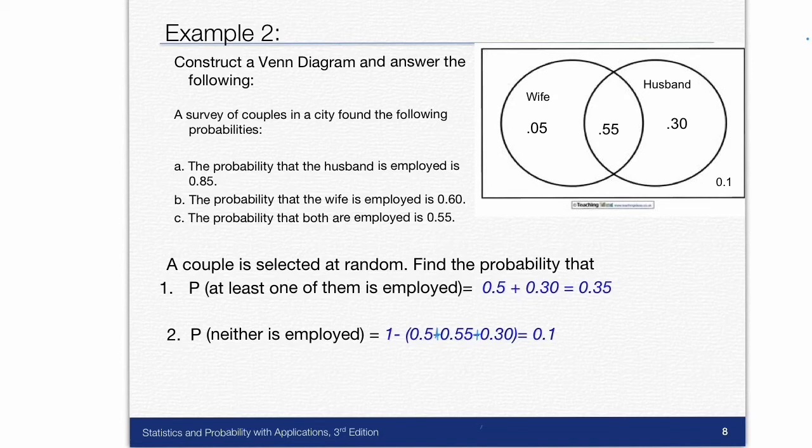A. The probability that the husband is employed is 0.85. B. The probability that the wife is employed is 0.6. And C. The probability that both are employed is 0.55. So again, you start with your two circles and your rectangle that borders them. And I would start with the intersection of the two probabilities. So this is the intersection statement right here. Probability that both are employed is 0.55. So I start there.